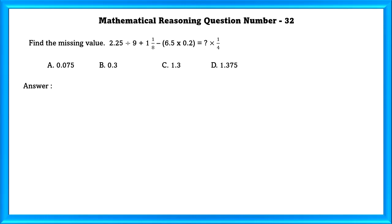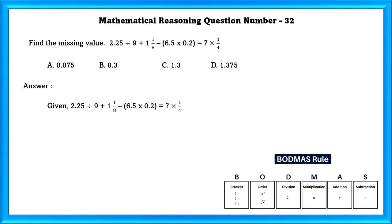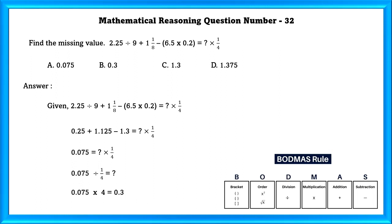Mathematical reasoning question number 32. Find the missing value. We have to follow the BODMAS rule: first do the brackets, then division, then addition and subtraction. Doing that we get 0.075, which is equal to the unknown × 1/4. Bringing 1/4 to the other side, we get 0.075 ÷ (1/4). Since we cannot divide by a fraction directly, we take the reciprocal. Doing that, we get the answer as 0.3.